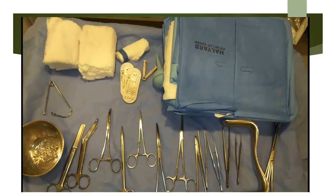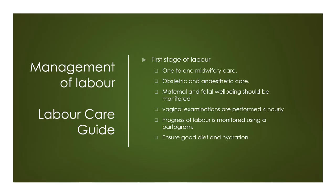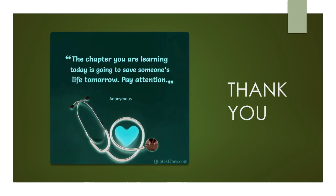For normal delivery, the necessary equipment includes cord clamps (disposable or metallic), cotton sheets for the baby, scissors (straight or episiotomy scissors), or a surgical blade for cutting the cord. Additional instruments may be needed for genital examination. Labor should be managed using a labor care guide, which will be covered in the next series.